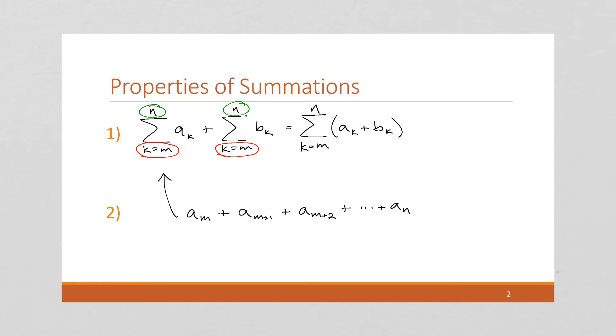And we're adding this sum to the sum of b sub k, which is going to be b of m. Because again we start at m and we go to n, b of m plus 1 plus b of m plus 2 plus all the way up to b of n.